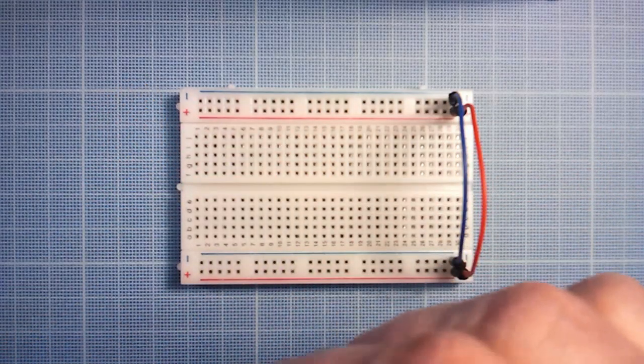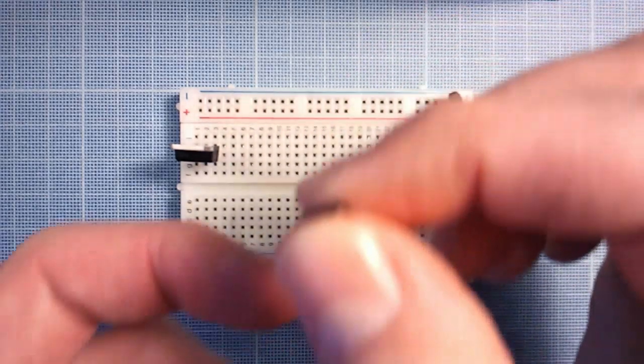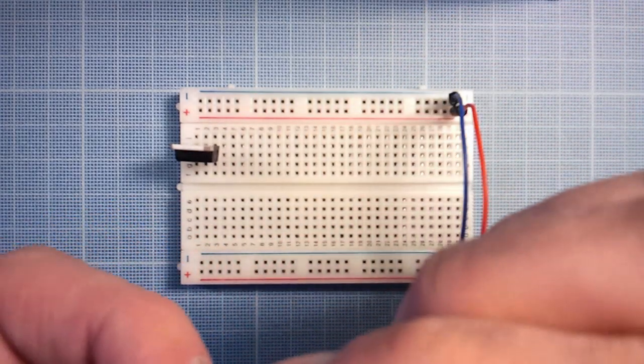Connect your voltage regulator to the breadboard. Connect a 10uF capacitor between the positive rail and ground. Pay attention to the capacitor's polarity.